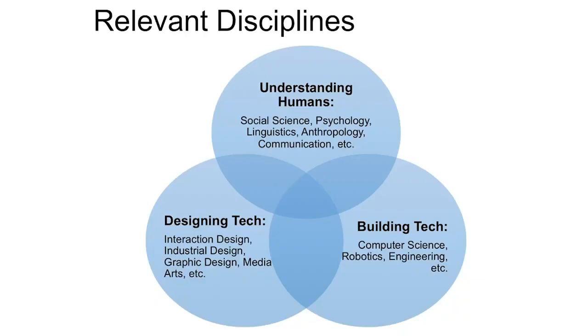Another thing that makes this different from other computing fields is its interdisciplinary nature. There are lots of relevant disciplines that contribute to human-computer interaction and user interface design. Some fields focus on understanding humans: social science, psychology, linguistics, anthropology, communication. Once you understand humans, you may want to know how to design for them — interaction design, industrial design, graphics, media arts. And finally, computer science and related fields like robotics and engineering contribute to actually building the technology.